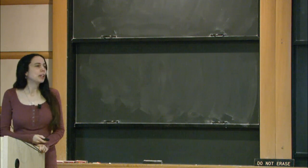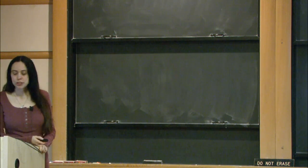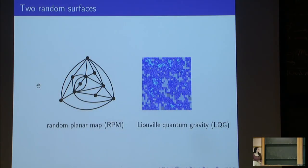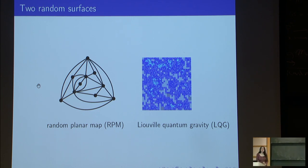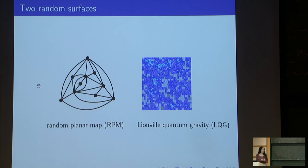In this talk we will be looking at two models for random surfaces: random planar maps and Liouville quantum gravity. A random planar map is a natural model for a discrete random surface, studied in combinatorics, probability, geometry, and mathematical physics. Liouville quantum gravity is a natural model for a continuum random surface with roots in the physical literature. The main result is a scaling limit result saying that the random planar map converges to Liouville quantum gravity when the size goes to infinity.